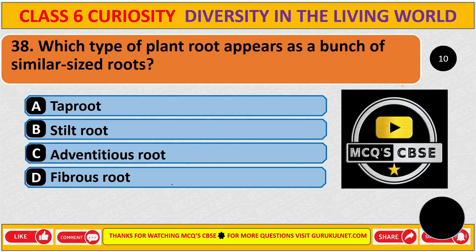Which type of plant root appears as a bunch of similar-sized roots? The correct answer is D: fibrous root.